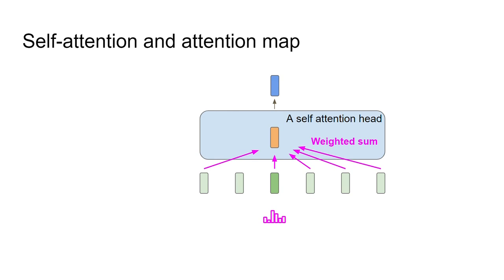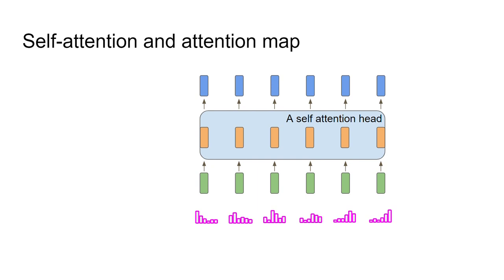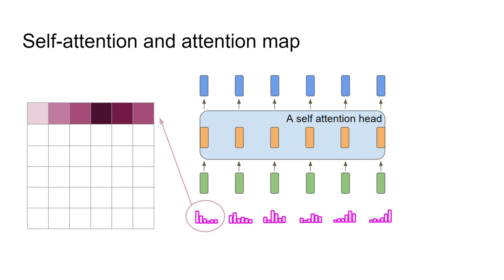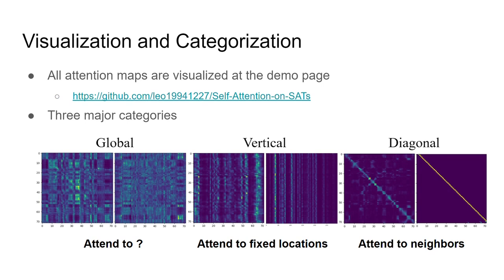In fact, attention weights are normalized as a distribution, and each query feature has its own attention distribution. We can visualize a head by an attention map, which summarizes the attention distribution for all queries in different timestamps.